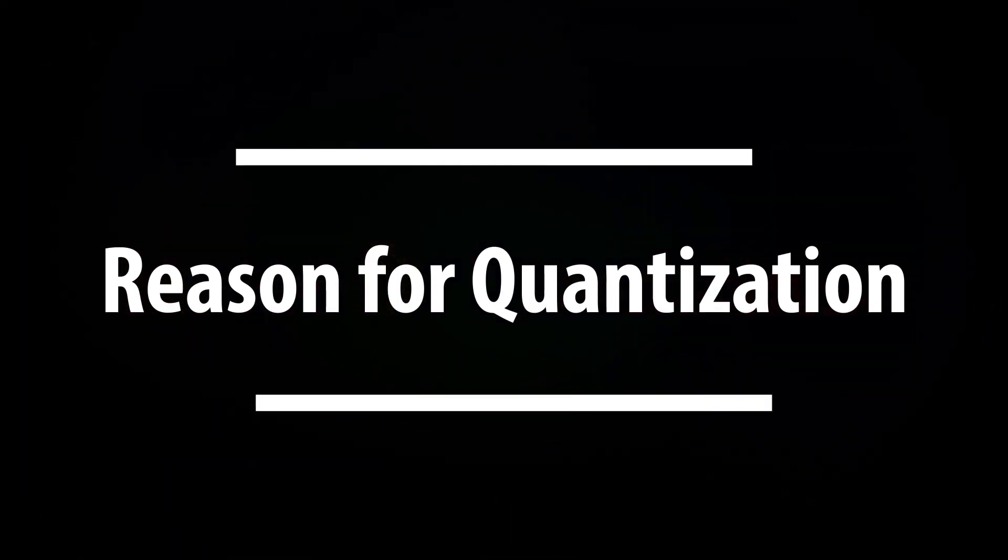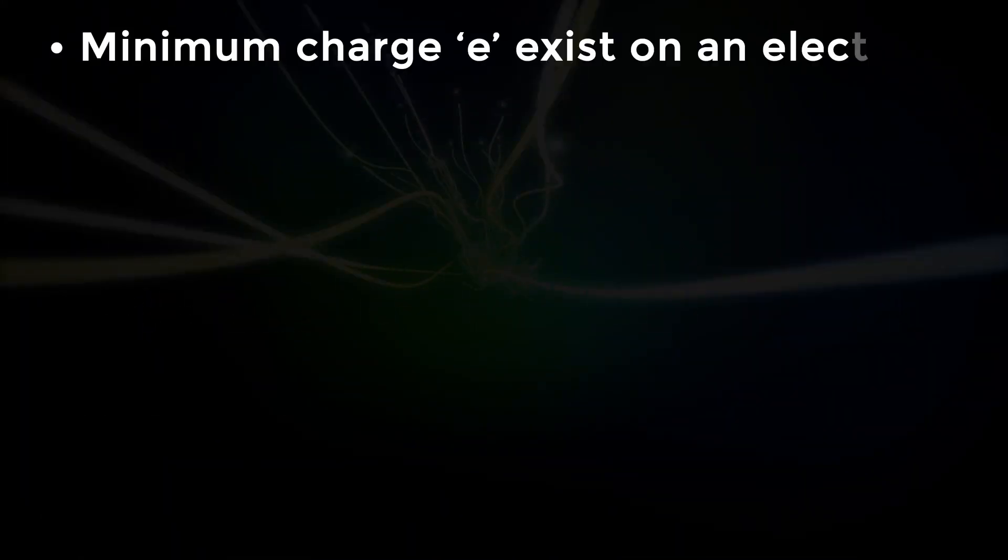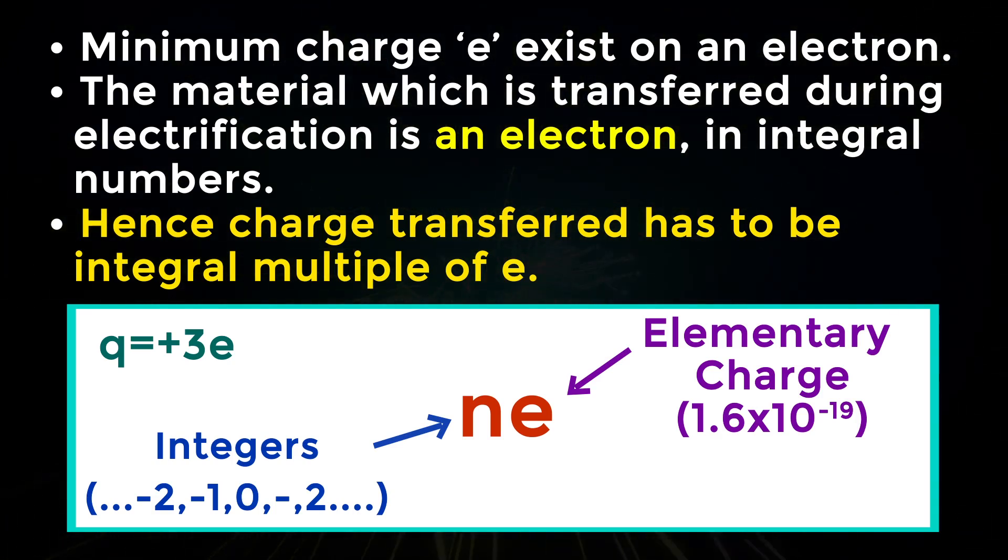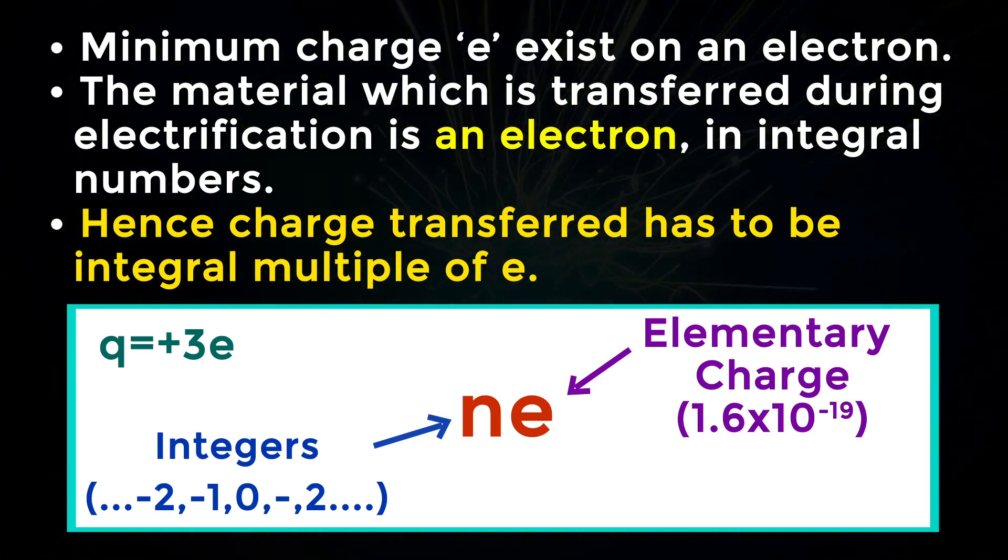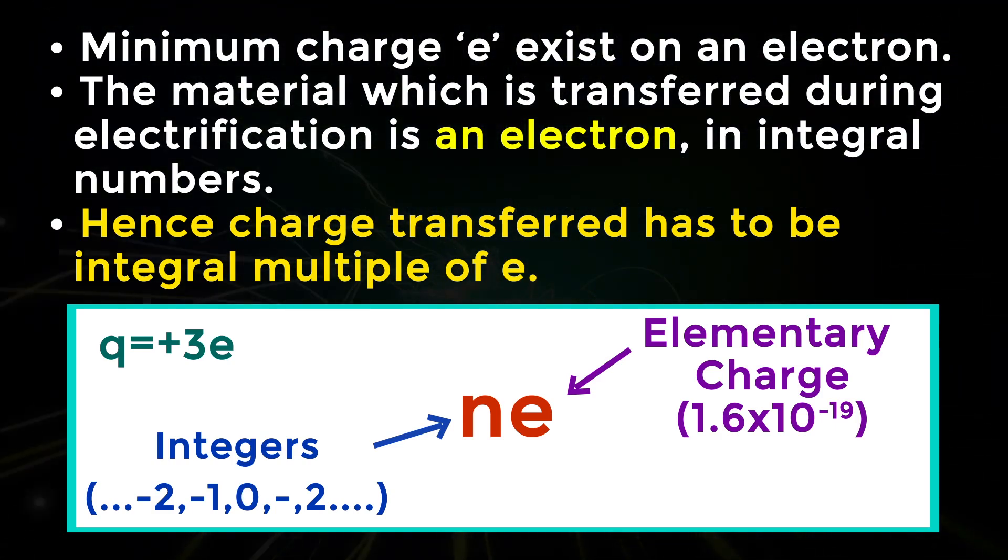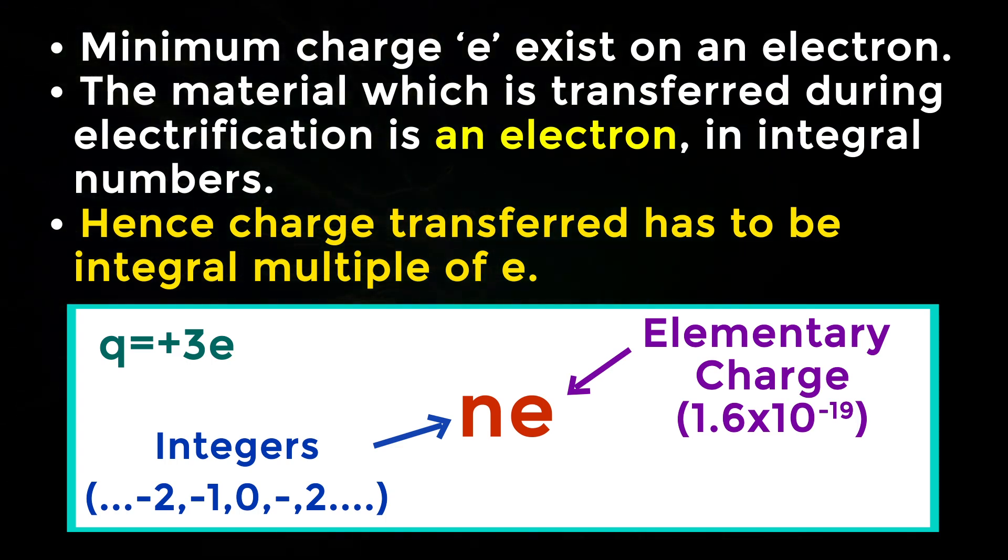Reason for quantization: Minimum charge e exists on an electron. The material which is transferred during electrification is an electron in integral numbers. Hence, charge transferred has to be integral multiple of e.